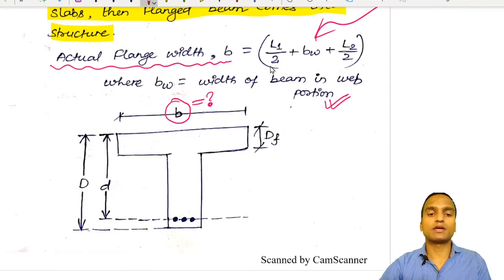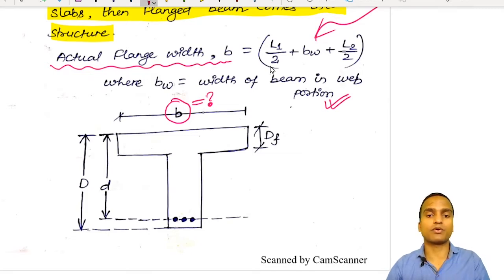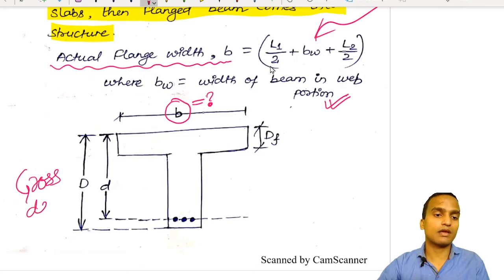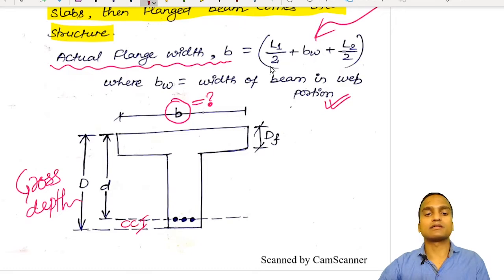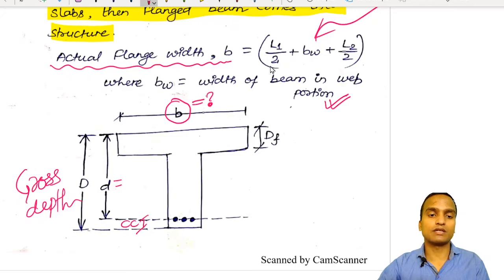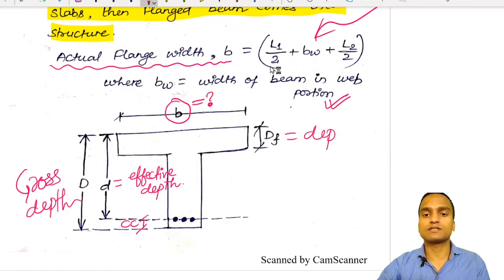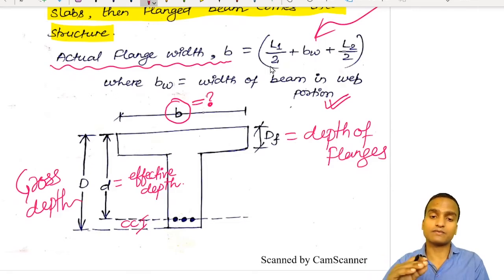We have isolated this T-beam from the continuous slab structure and drawn its cross section. The dimensions are: capital D is the gross depth, with a clear cover at the bottom — this is an example of a singly reinforced beam. The effective depth is small d. Capital Df is the depth of the flange section, which is basically equal to the depth of the slab.